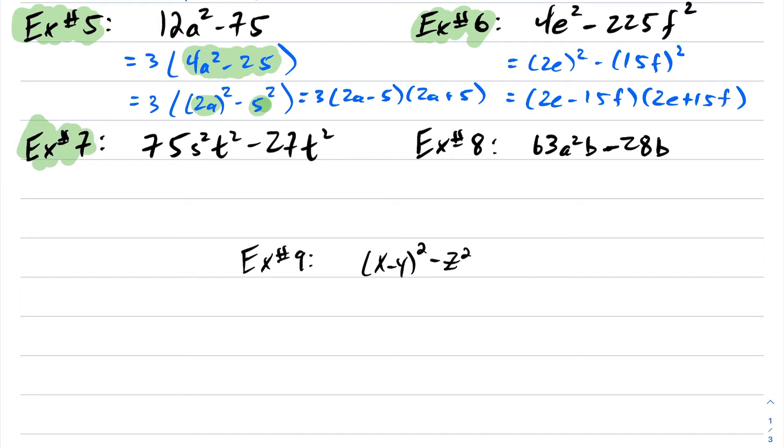Okay, let's look at example 7. So same idea here. We want to look for a GCF. I see I can factor out, I can factor a 3 out of here, but I can also factor out a t². So if I factor out a 3t², keep in mind the operation here is division. So 75 divided by 3 is going to be 25. The s² is unchanged and the t² is gone. Now we have 27 divided by 3 is 9. And we're just left with this.